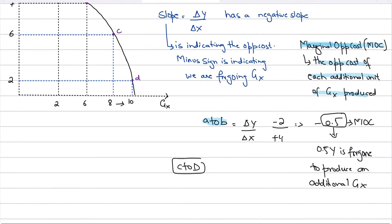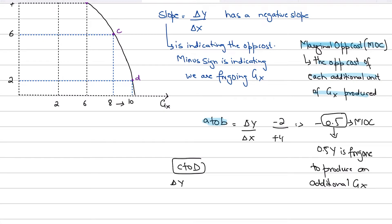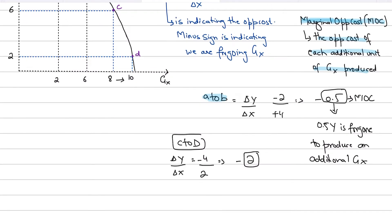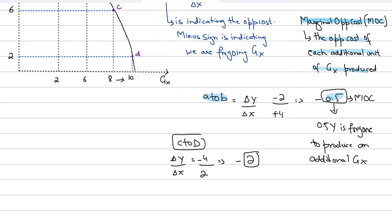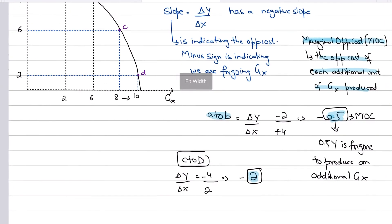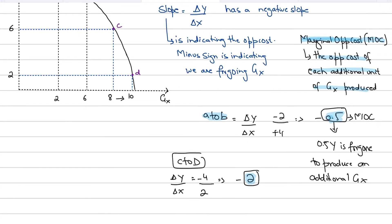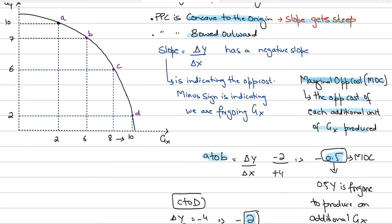Moving from C to D, let's calculate the marginal opportunity cost: change in Y over change in X. The change in Y is 4 (you're foregoing 4Y in order to produce 2X), so the marginal opportunity cost is minus 2. We can clearly see that the opportunity cost is going up — initially it was 0.5 when the curve was flatter, and now the marginal opportunity cost is 2. The opportunity cost has gone from 0.5 to 2.